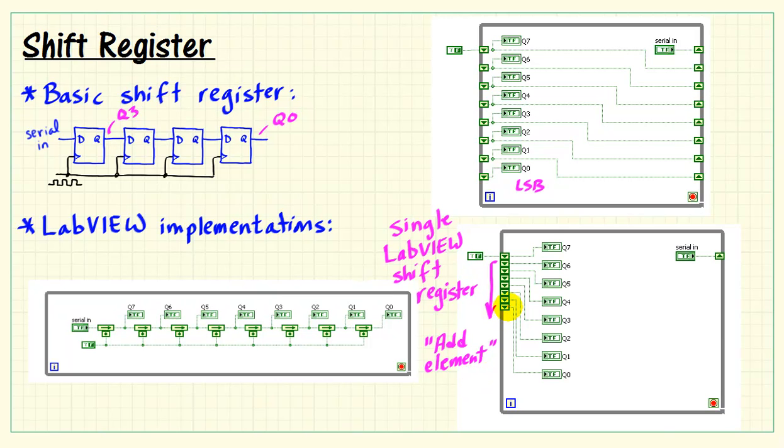The additional terminals keep track of values that occurred not only in the previous iteration, but on even more previous iterations. All right, so we see that there are no terminals on the right side. Again, indicating that we only have a single LabVIEW shift register structure, but with multiple terminals exposed. Thank you.